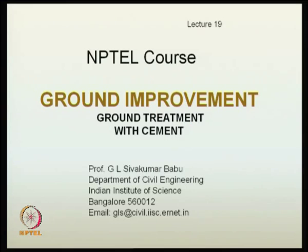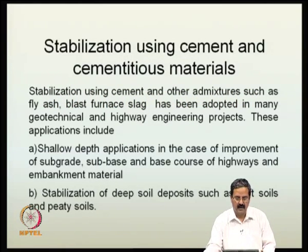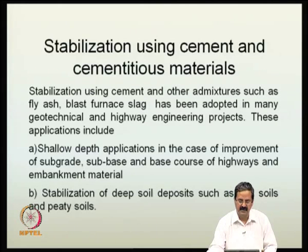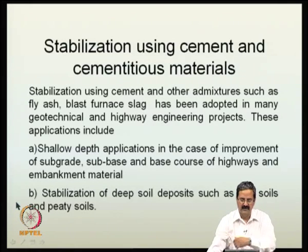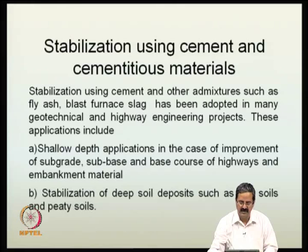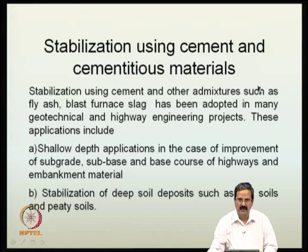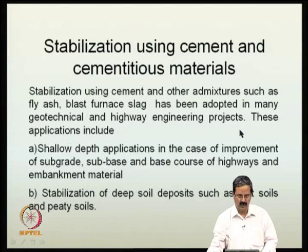Today, we would be talking about one of the classical ground improvement techniques, namely stabilization with cement. Stabilization using cement and cementitious materials is one of the standard techniques, because many of the in-situ soils do not have good bonding. To increase bonding resistance, cementitious materials like fly ash are used. Fly ash also has some cementitious compounds. Stabilization using cement and admixtures such as fly ash and blast furnace slag has been adopted in many geotechnical and highway engineering projects, whether it is slopes, embankments, or highways.